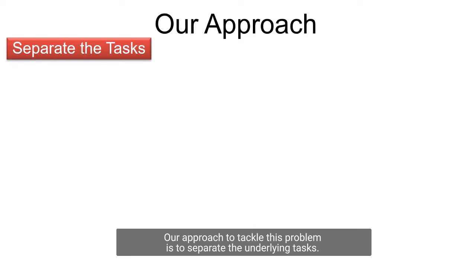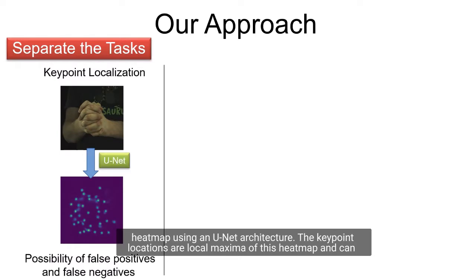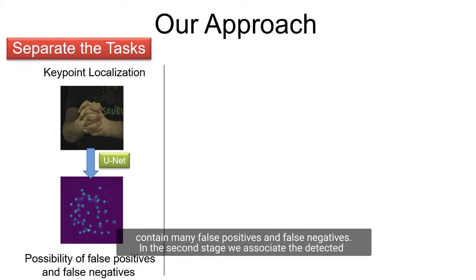Our approach to tackle this problem is to separate the underlying tasks. We first estimate the potential locations of the keypoints by regressing a single channel heatmap using a U-Net architecture. The keypoint locations are local maxima of this heatmap and can contain many false positives and false negatives.